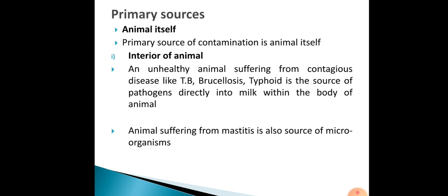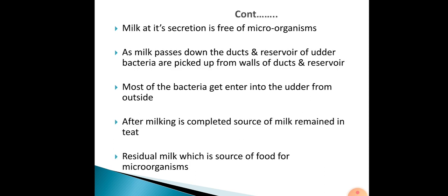Animals suffering from mastitis — the inflammation of the udder — are also a source of microorganisms. Milk at its secretion is free of microorganisms, but as milk passes down the ducts and reservoir of the udder, bacteria are picked up from the walls of the duct and reservoir. Most bacteria enter the udder from outside. After milking is completed, residual milk remains in the teats as a source of food for microorganisms.